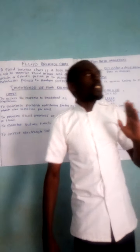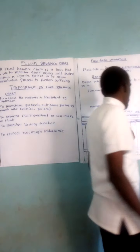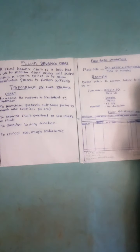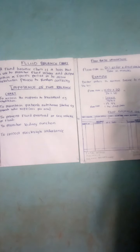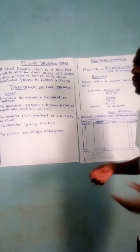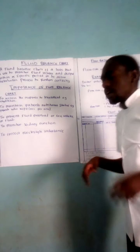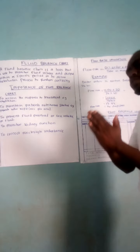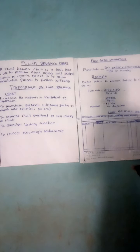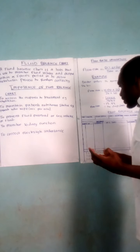On the left side of the fluid balance chart, that is where we have the output. There is also a time column, a column for urine, a column for diarrhea, and an 'others' column which may include vomit or drains from theater. You measure the urine using a measuring jug and indicate the time.